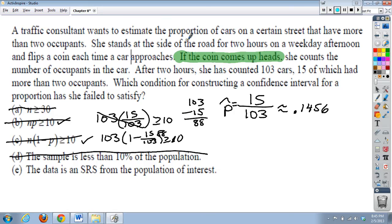it states here that she stands at the side of the road for two hours on a weekday afternoon. Now, two hours on a weekday afternoon, does that represent, can we say that it accurately represents the population of all times? And I would say no. If we wanted to do more of all times, we might want to consider, well, during a week period,